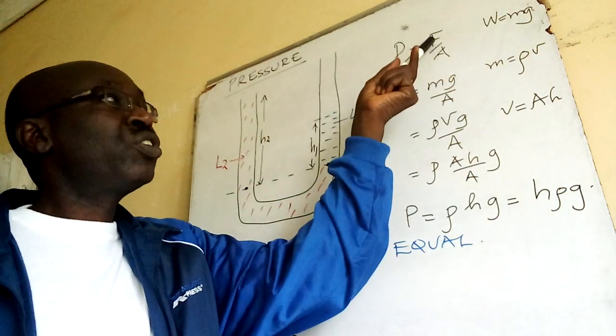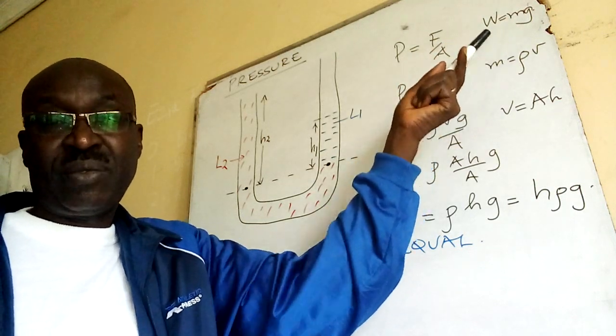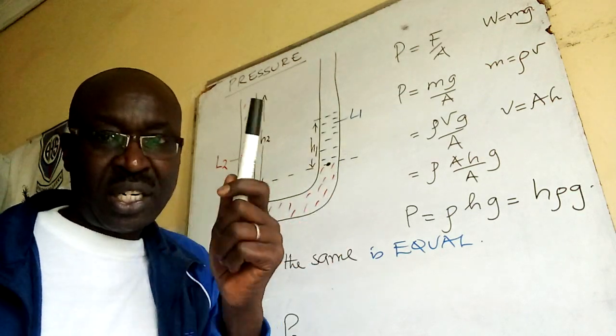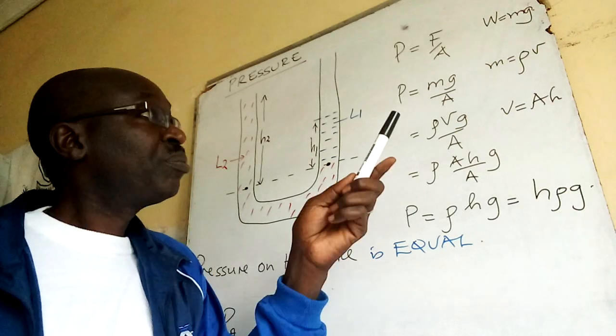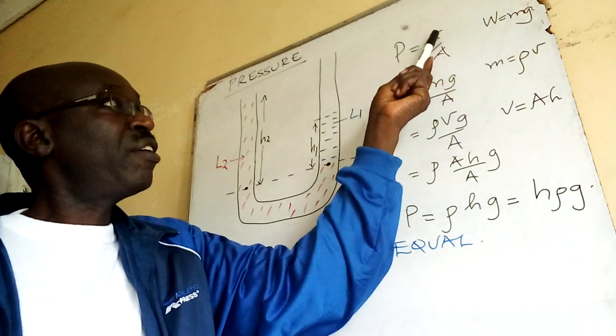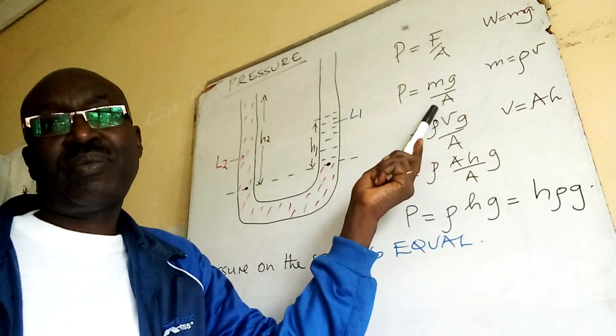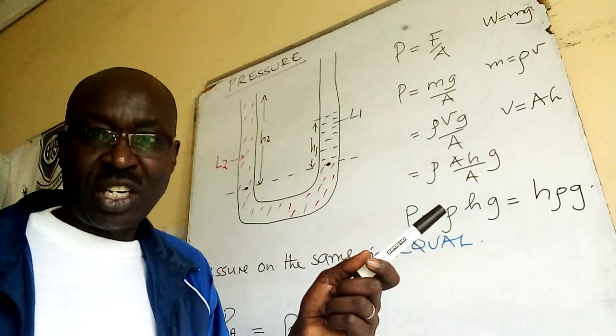Now force is a product of mass and gravity, because weight is a type of force. But not all forces are weight. So if I remove F using Mg, I write Mg over A. So F has been removed, Mg replacing it.